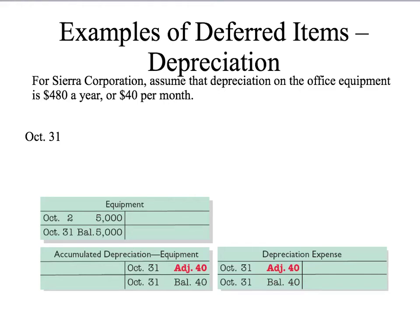Another type of deferred item is depreciation. Depreciation is the using up of our physical assets, like buildings, equipment, and trucks. As the accounting period goes along, we are consuming these assets. At the end of the accounting period, we must recognize that we've used up some of that asset. Assume we're talking about office equipment depreciated at $480 a year or $40 a month. We recognize the expense: depreciation expense — office equipment — debit $40. I always debit the expenses.